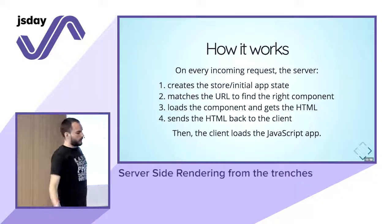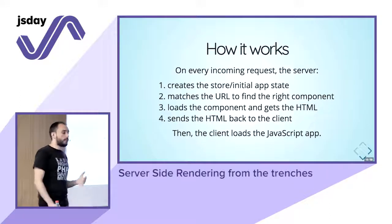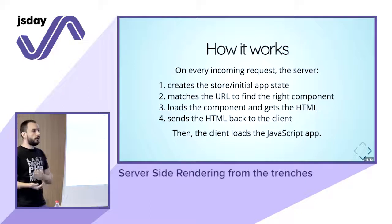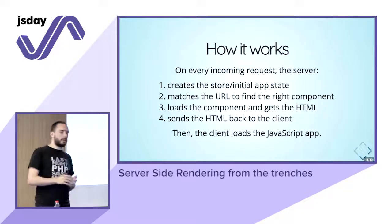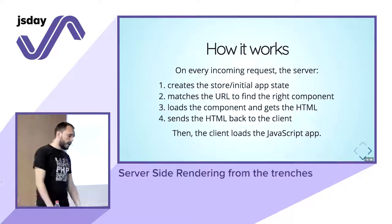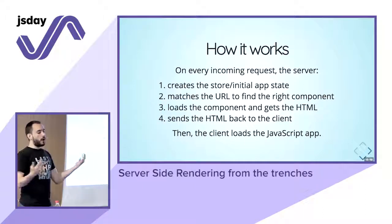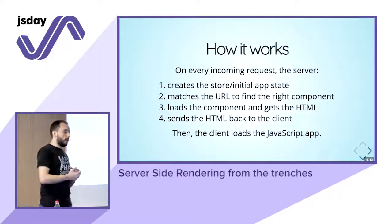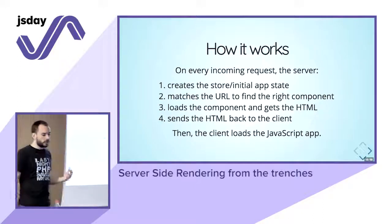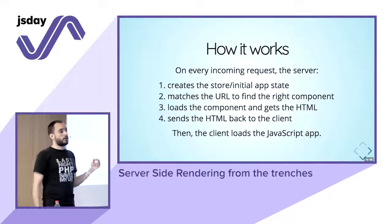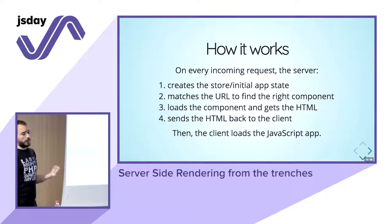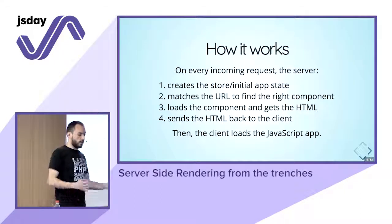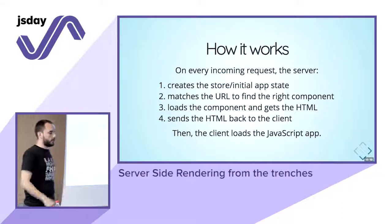So how does it work on the server? For every incoming request the server has to create some sort of store or initial application state — this is common to any framework, in Redux with React or in VueX with Vue, it's called a store. Then there is some sort of routing mechanism to find which page to load depending on which request has been made. You have to make sure your routing layer works in the browser as well as in a Node.js process — there is no window.location on the server for instance. Then you load the component, get the HTML, and send it back to the client.